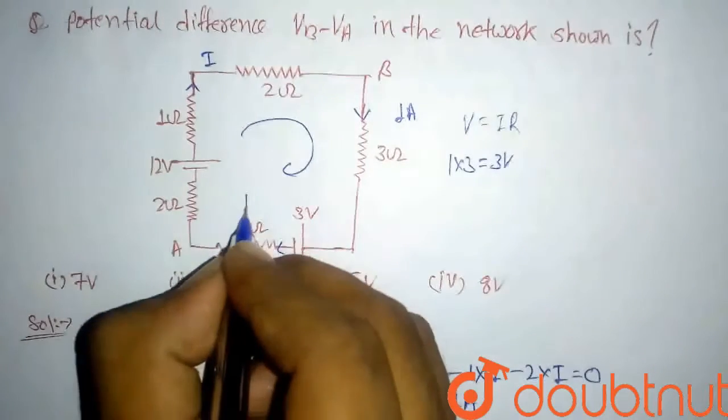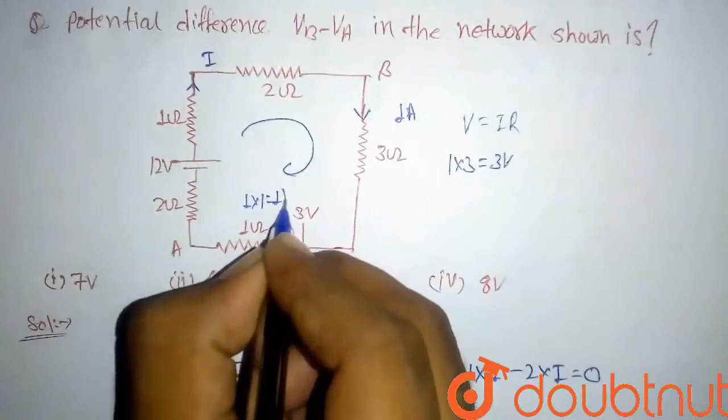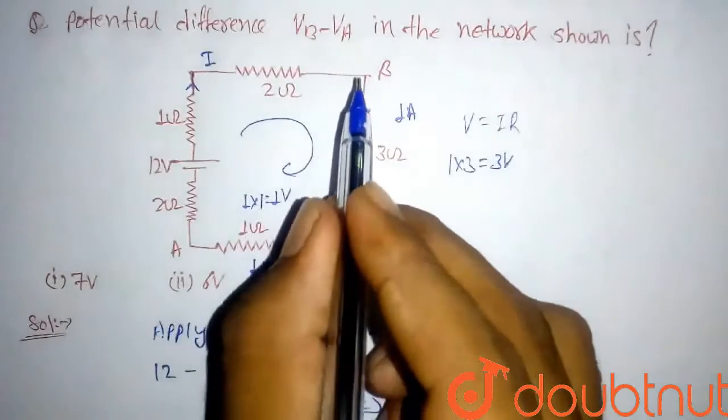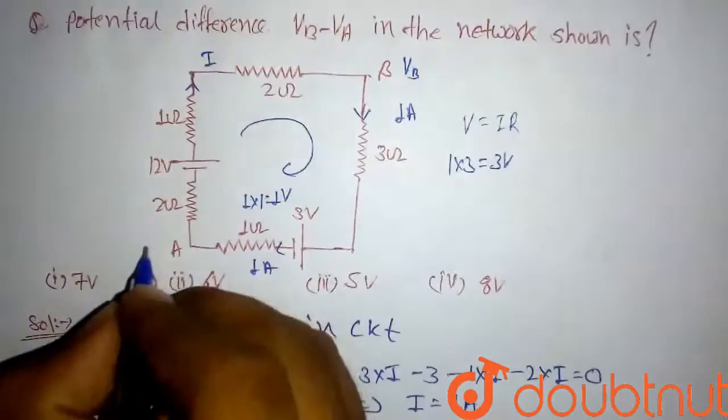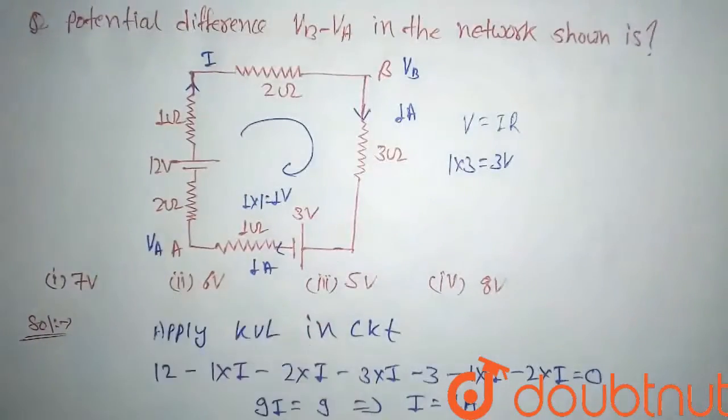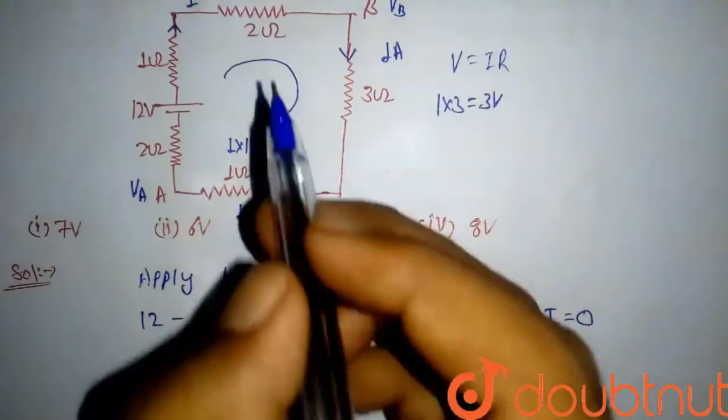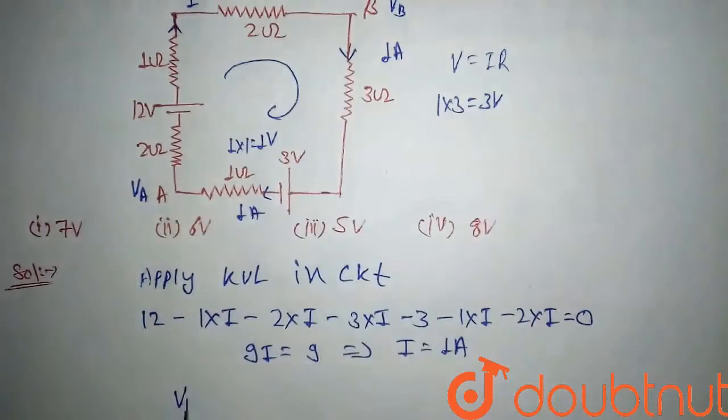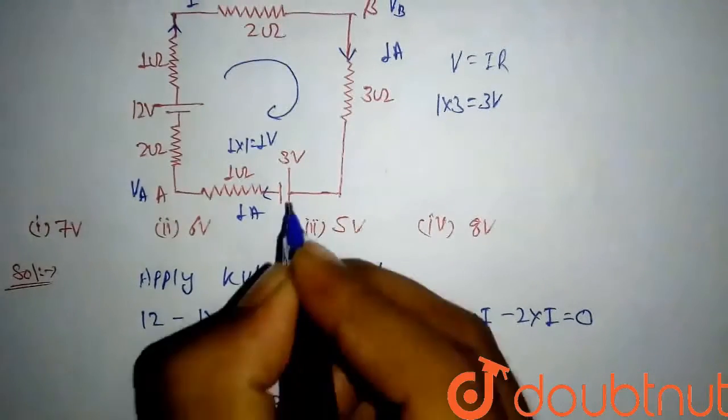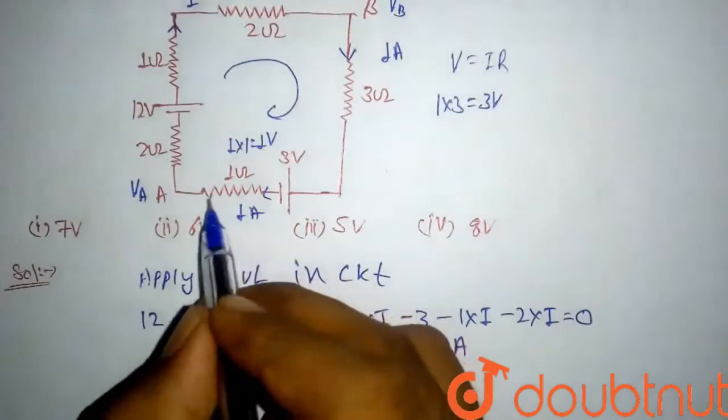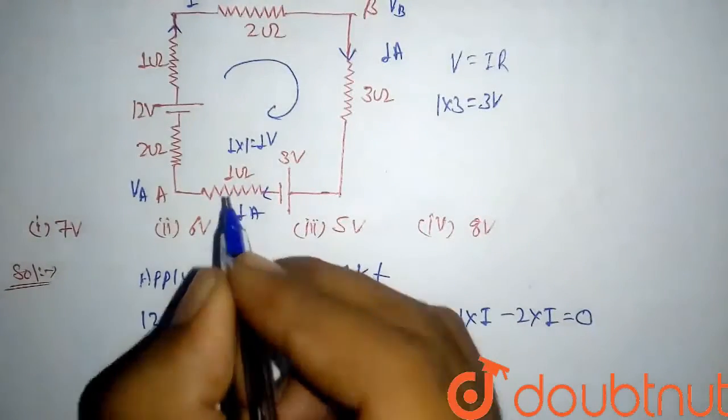So again apply KVL from b to a. Assume that here the voltage is Vb and here the voltage is Va. So on applying KVL here, Vb minus 3 volt voltage drop minus 3 volt battery and here voltage drop is minus 1 volt equals to Va.